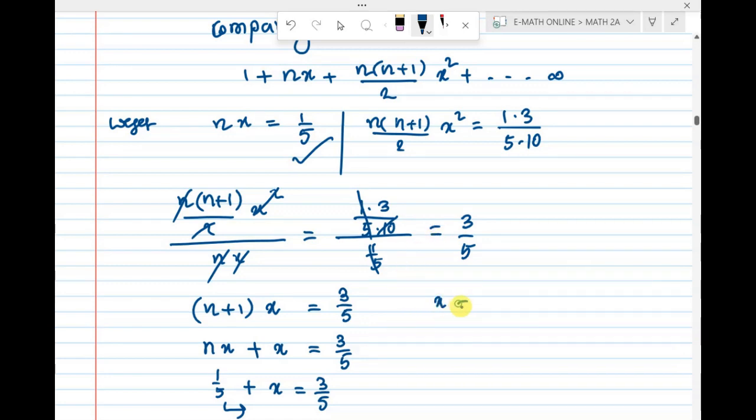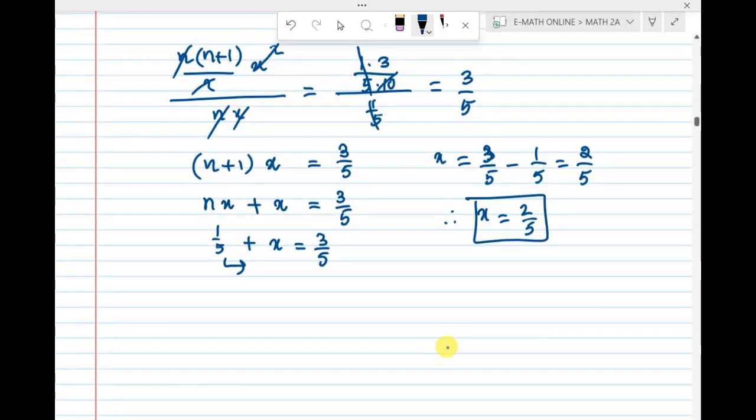Then x equal to 3 by 5 minus 1 by 5, the value is 2 by 5. Therefore x equal to 2 by 5.